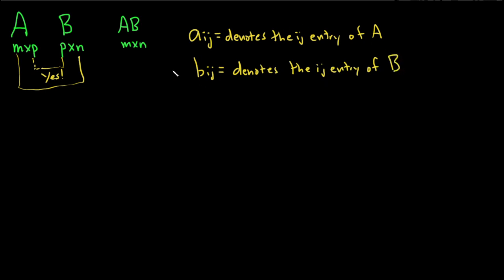And then we need some notation for AB. Let's use Cij. That's going to denote the ij entry of AB, which we could call C. So that's why I'm using C. Actually, I use C because it's the next letter in the alphabet.